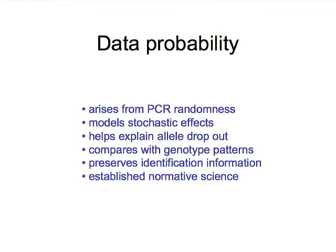So, in conclusion, data is really a probability distribution. The points that you observe are sampled from an underlying probability distribution and this probability arises from the inherent randomness of the polymerase chain reaction. Now, we can model stochastic effects to get a handle on what that randomness is. By doing this modeling, we can help explain phenomena like allele dropout but even more importantly, make considered comparisons with genotype patterns and see what patterns might lie where the data do and which patterns don't. The goal of all this is to preserve all of the identification information that is present in the underlying quantitative STR evidence data using established normative science and the rules of probability, computation, and mathematics. Thank you.